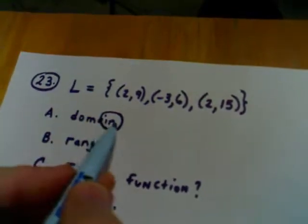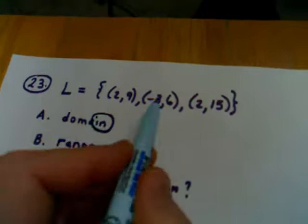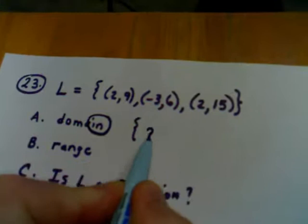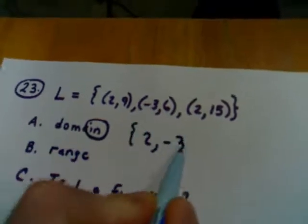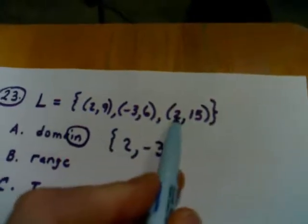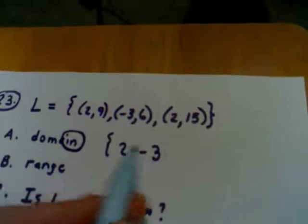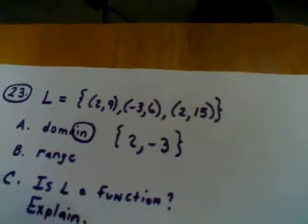So the domain is the set of all things that go in to the relation. So in this case, it would be the set containing 2, negative 3, and there's no reason to list 2 again since we already have it listed. You don't repeat things in a set. So that would be my domain.